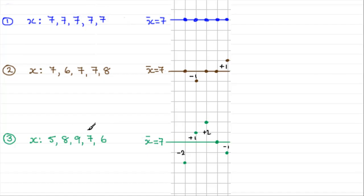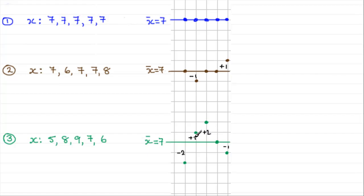In the third set, adding up and dividing by five again gives x-bar equal to seven. The first observation, five, is two deviations below the mean. The eight is one above, the nine is two deviations above, and the six is one deviation below the mean. The seven is on the mean so there's no deviation. You can see the plus one and plus two cancel out with the minus two and minus one.